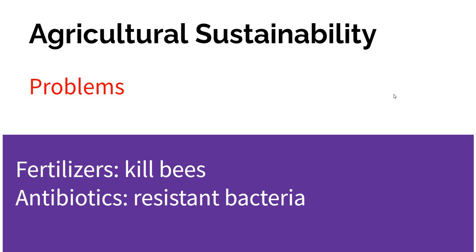Other indirect problems of fertilizers: they tend to cause the death of bees. There is a real problem with bee populations in the United States right now — nobody knows exactly what's causing it, but this may be part of it. And the overuse of antibiotics, because you're trying to increase food production — on one hand that's good, but on the other hand you're probably creating resistant bacteria, which then get into the general population, and that's a bad thing.